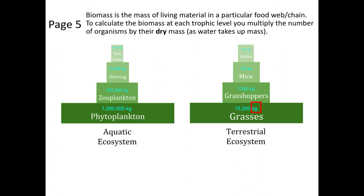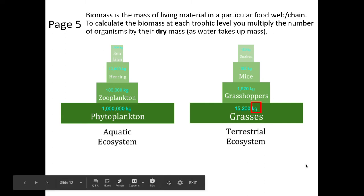As well as our pyramid of numbers, we can have our biomass. Now biomass is the mass of living material in a particular food chain or web. To calculate the biomass at each trophic level, you must multiply the number of organisms by their dry mass, as water obviously takes up mass as well. Important: we know that this is in kilograms, not grams, not micrograms. The red box means it has been questioned on a mark scheme before, so well worth trying to remember the units used here.